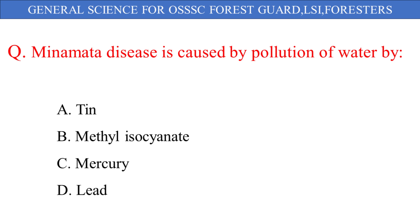Minamata disease is caused by pollution of water by: A. Tin, B. Methyl isocyanate, C. Mercury, D. Lead. And the correct answer is option C: Mercury.